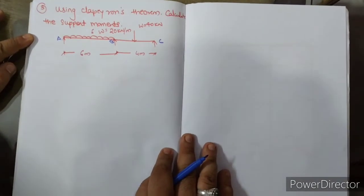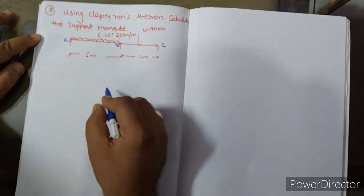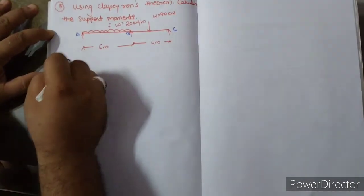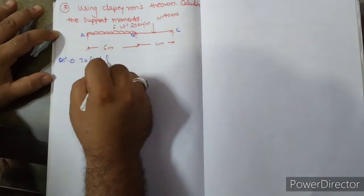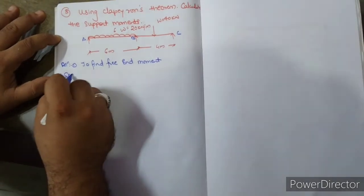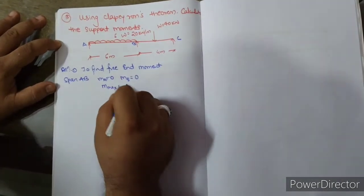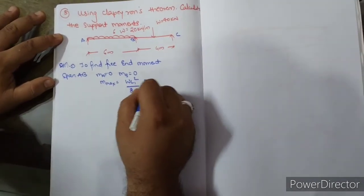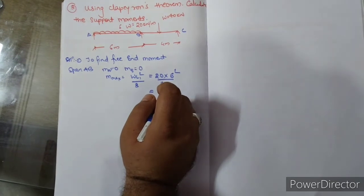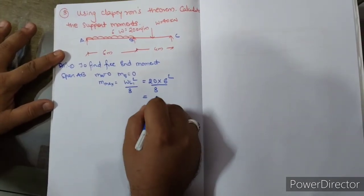Next numerical: आपको diagram दिया हुआ है और Clapeyron's theorem का use करना है. दो span हैं: A-B पे UDL है 20 का, B-C पे central point load है 40 का. Step 1: To find free end moments. Span AB: M max = WL1 square by 8 = 20 into 6 square by 8. Answer है 90 kN·m.